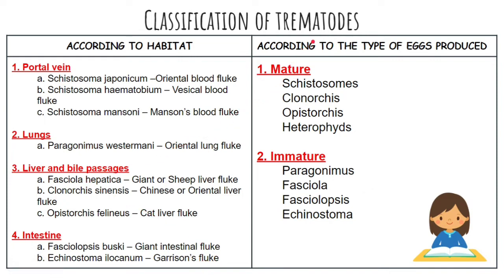We can also categorize Trematodes according to the type of egg they produce. Those that produce mature eggs include schistosomes, Clonorchis, Opisthorchis, and Heterophyes. Those that produce immature eggs include Paragonimus, Fasciola, Fasciolopsis, and Echinostoma.